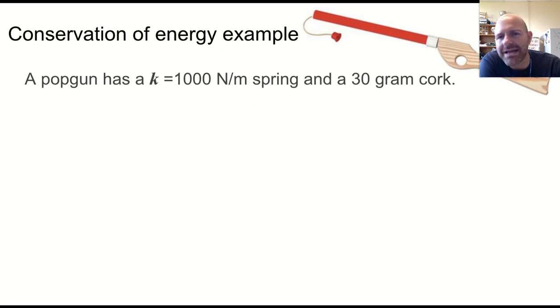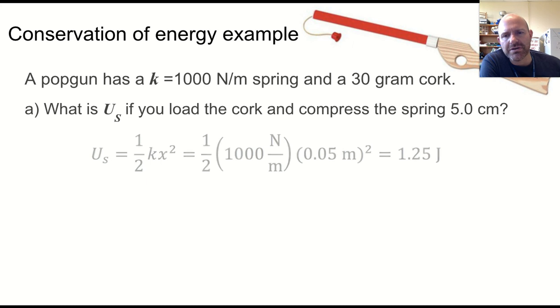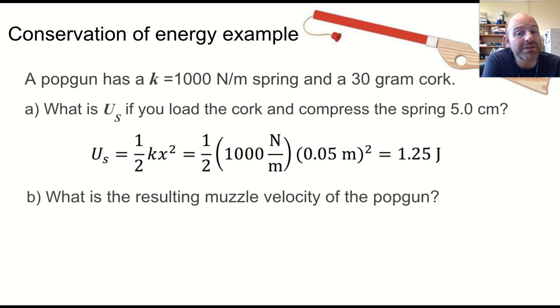So last example here, if we want to conserve energy, imagine something like a little spring-loaded toy pop gun, right? It's got a little cork on the end attached to a string, and the spring inside has a thousand newton per meter spring constant, and the cork is 30 grams. What is the spring potential energy if you load the cork and compress the spring five centimeters? Well, that's one half kx squared or 1.25 joules.